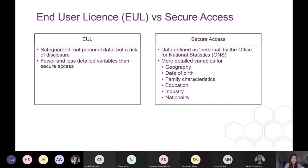The EUL and the secure access versions of the data are different. The key thing to be aware of is that the secure access datasets usually contain extra variables that can't be found in the EUL data. These tend to cover topics defined as personal by the ONS, such as more detailed geography, education details such as specific courses people have undertaken, household details such as the number of family units, health-related work problems, nationality and disability.